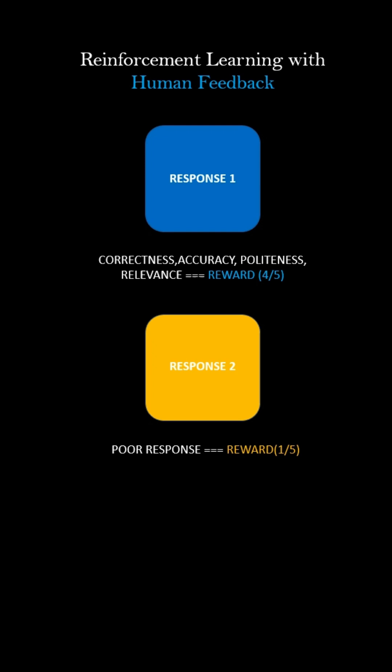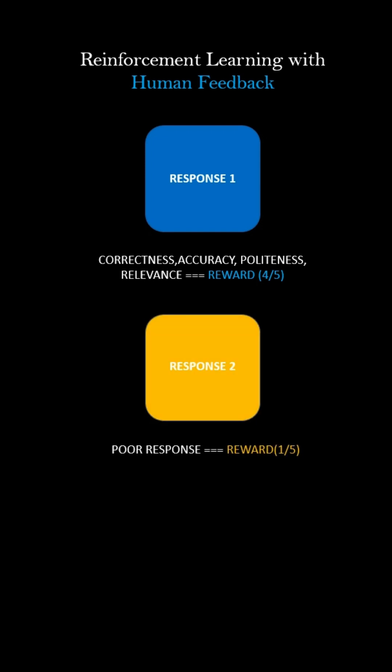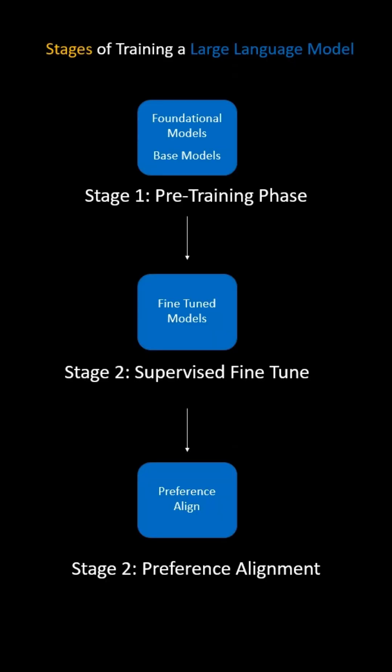The model receives higher rewards for better responses that match human preferences and lower rewards for poor responses. With this, the three phases of LLM training are complete.